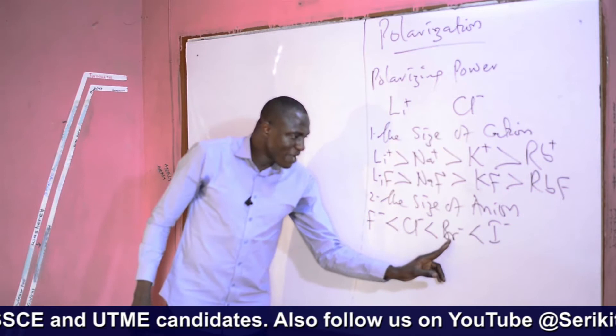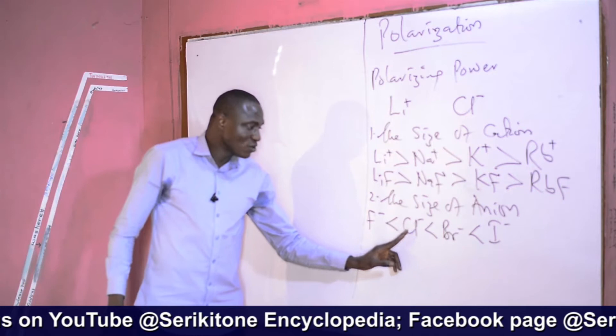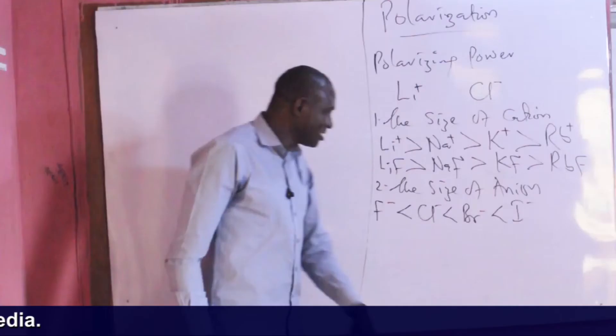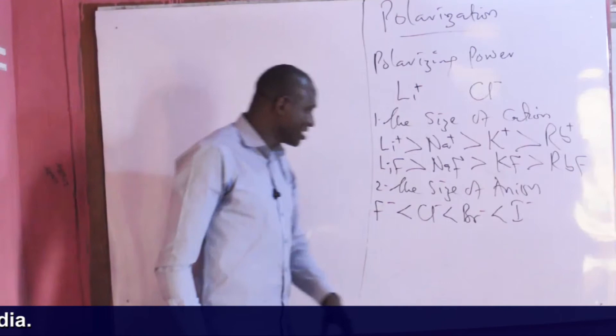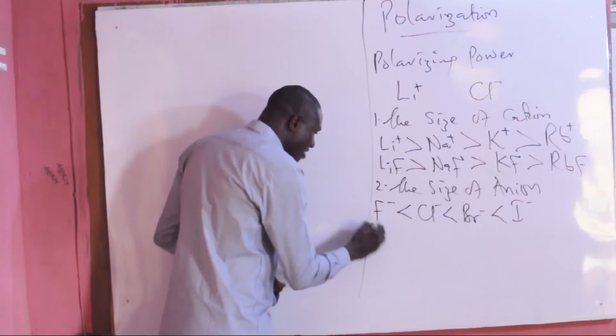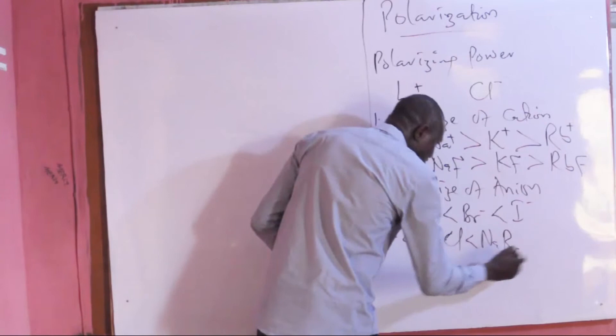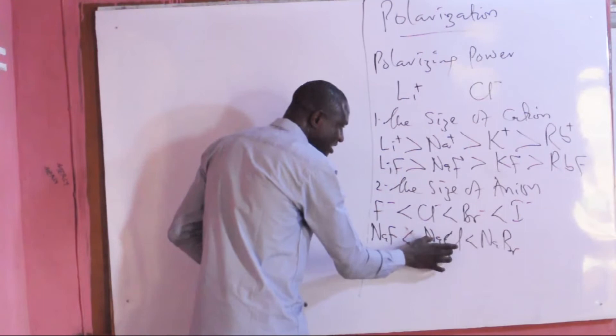So iodide ion has more polarization than bromide ion, which has more polarization than chloride ion, which has more polarization than fluoride ion. This means the covalent character of the halide ion increases down the group, while their ionic character decreases down the group. When they react with sodium, sodium fluoride is more ionic in nature than sodium chloride, which is more ionic than sodium bromide, and so on. So iodide compounds have greater covalent character, while fluoride compounds have greater ionic character.